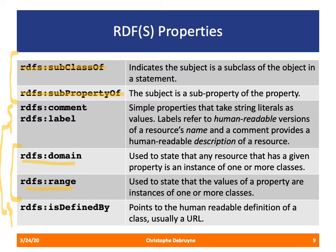RDFS domain and range allow us to state something about properties. Domain is used to say what the type of resource is when it plays that role — if having a name has the domain person, then whenever something plays the role of having a name, that thing is of type person. Similarly for range, it states something about the type of the object of an RDF triple. If having a name has the range xsd:string, then whenever a literal plays that role, it's supposed to be an xsd:string.